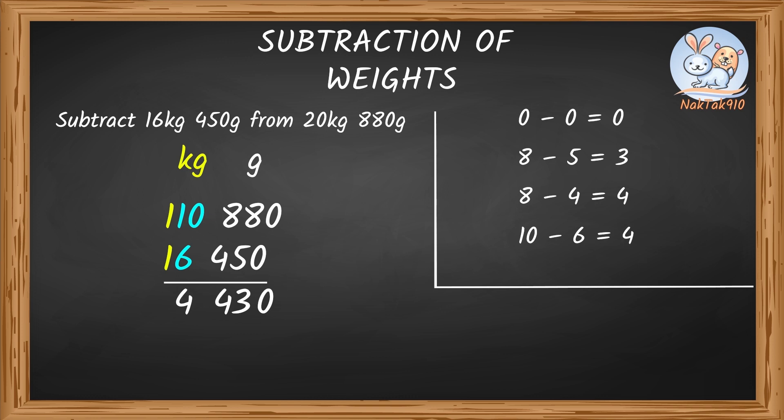Now, move to the next column. 1 minus 1 equals 0. So, we're done with subtracting. We get 4 kg 430 grams on subtracting 16 kg 450 grams from 20 kg 880 grams.